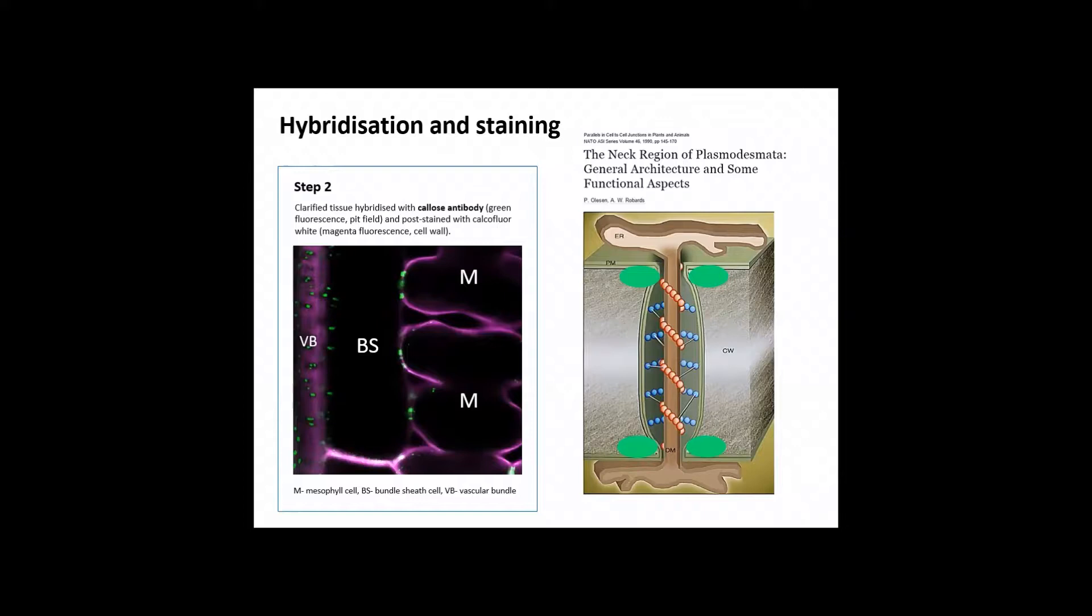In addition to the antibody, I also used a post-stain, which is calcofluor white. Calcofluor white basically stains the cell wall, and that will be your magenta fluorescence.